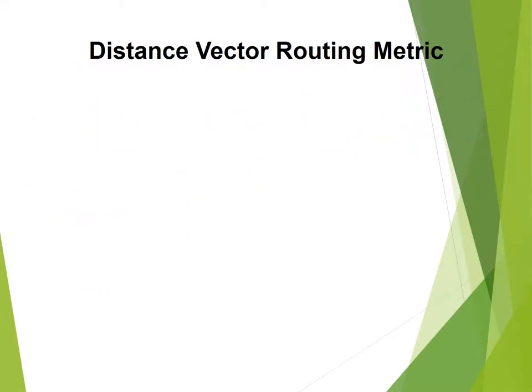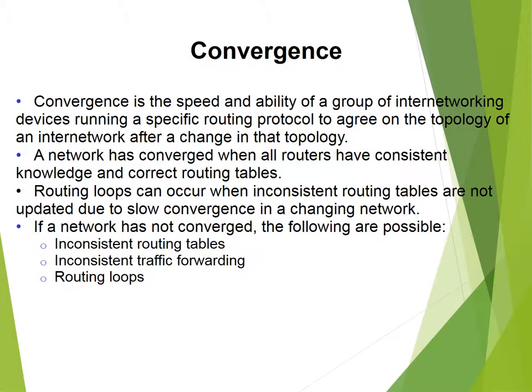The Distance Vector Routing Metric refers to the speed and ability of a group of internetworking devices running a specific routing protocol to agree on the topology of a network after a change in the topology. A network has converged when all routers have consistent knowledge and correct routing tables. Routing loops can occur when inconsistent routing tables are not updated due to slow convergence in a changing environment.